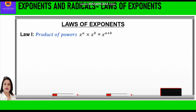The first law is product of powers, which says x raised to power a into x raised to power b is equal to x raised to power a plus b. That means whenever two exponents are multiplied, we add the powers. The second law is quotient of powers, which says x raised to power a divided by x raised to power b is equal to x raised to power a minus b. So whenever we have to divide the exponents, we subtract the powers.